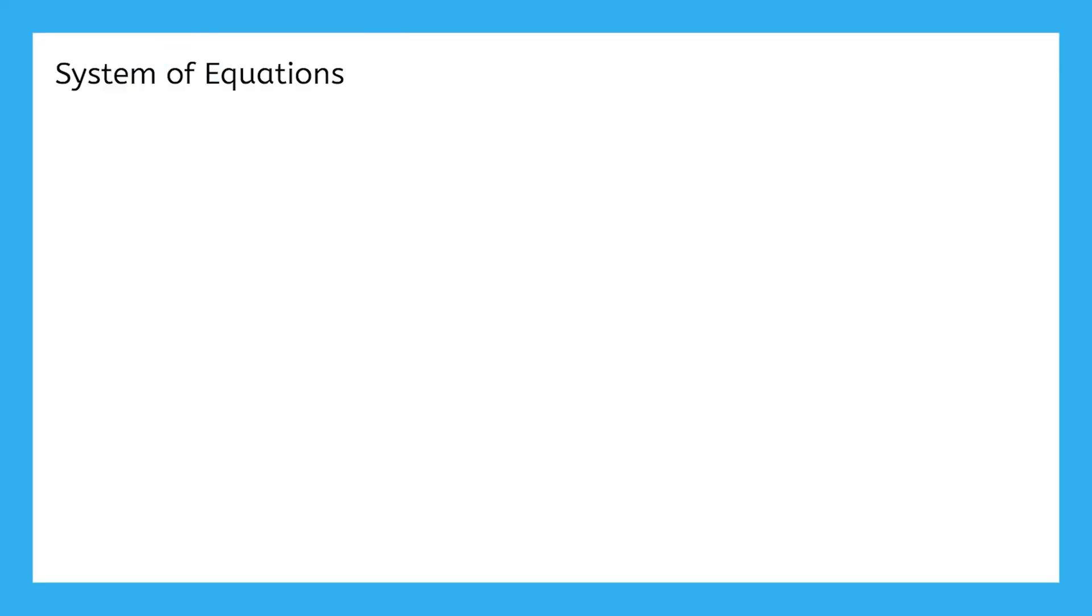A system of equations is when we have two or more equations that share the same variables. More specifically, in this unit, we'll be working with systems involving two linear equations. This just means we're working with the same kinds of equations you've been using in the last few units, ones that make straight lines when graphed, and we're only working with two equations at a time.